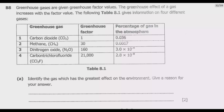Question B8: Greenhouse gases are given greenhouse factor values. The greenhouse effect of a gas increases with the factor value. Table 8.1 gives information on four different gases: carbon dioxide, methane, nitrogen oxide, and carbon trichlorofluoride. The greenhouse factor increases as we go down the table, while the percentage of gas in the atmosphere reduces as we go down, becoming more negative.